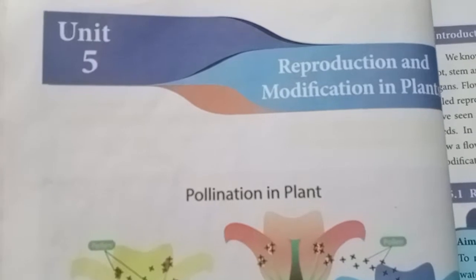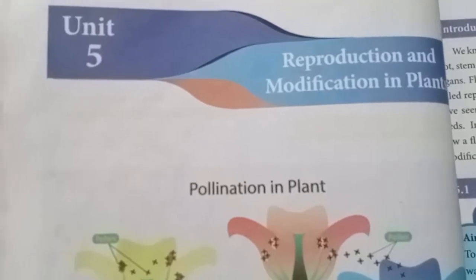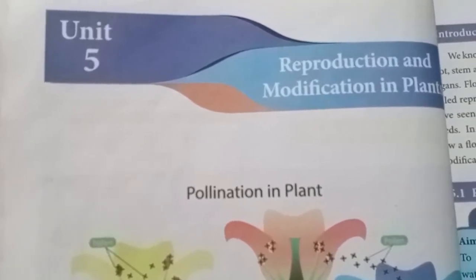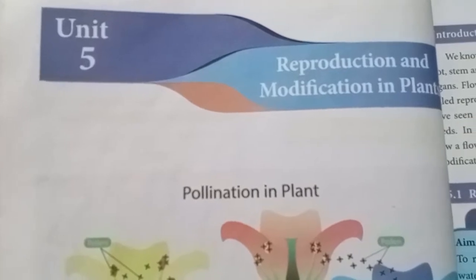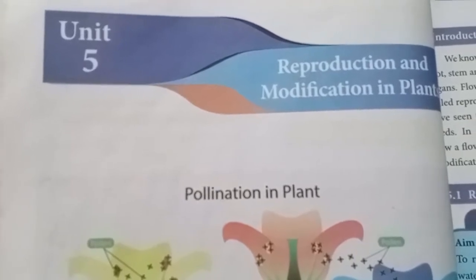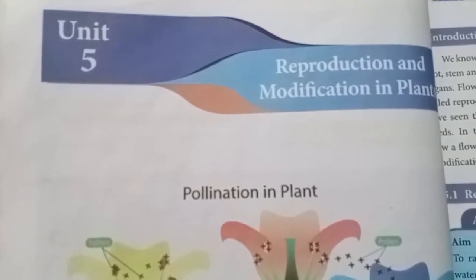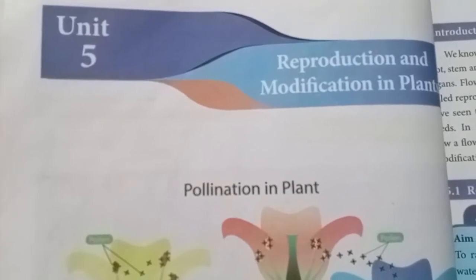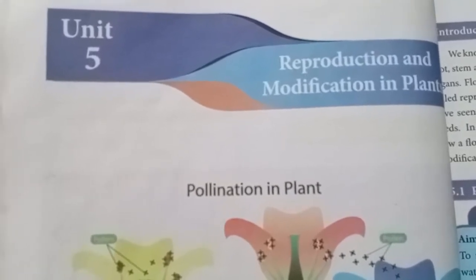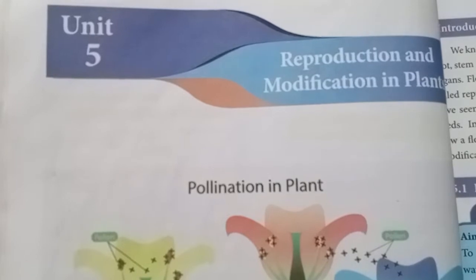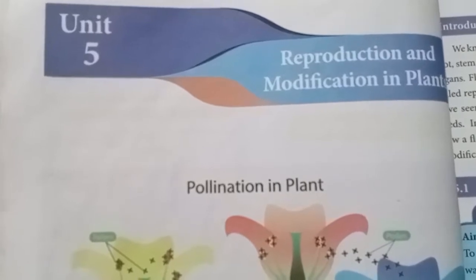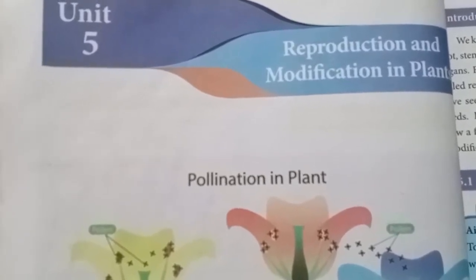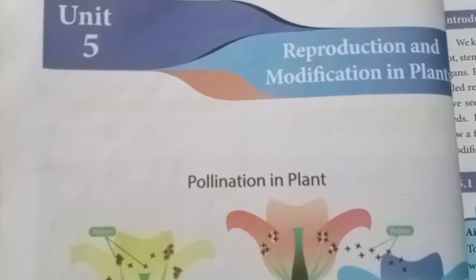In sexual reproduction, the reproduction is achieved by the interaction of male and female parts of the flower. The male part of the flower is the androecium and the female part of the flower is the gynoecium. With the help of these male and female reproductive parts, the flower involves in sexual reproduction.